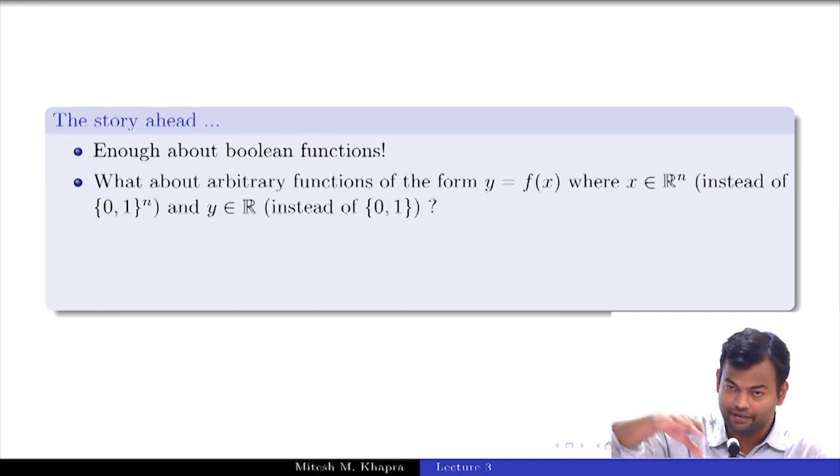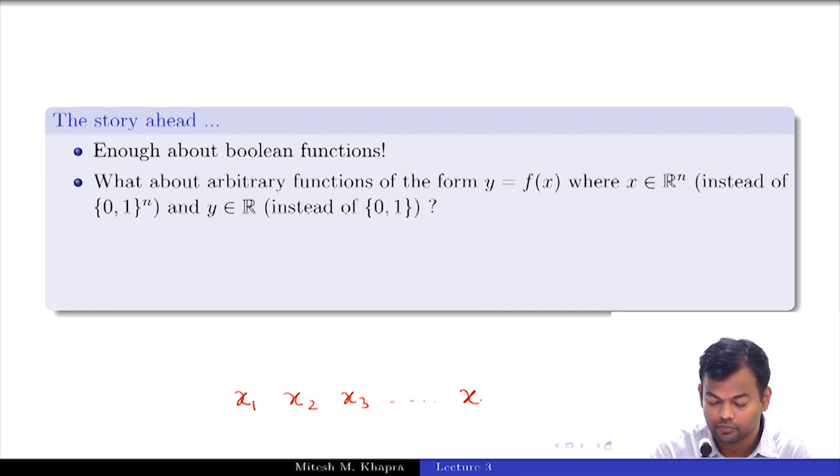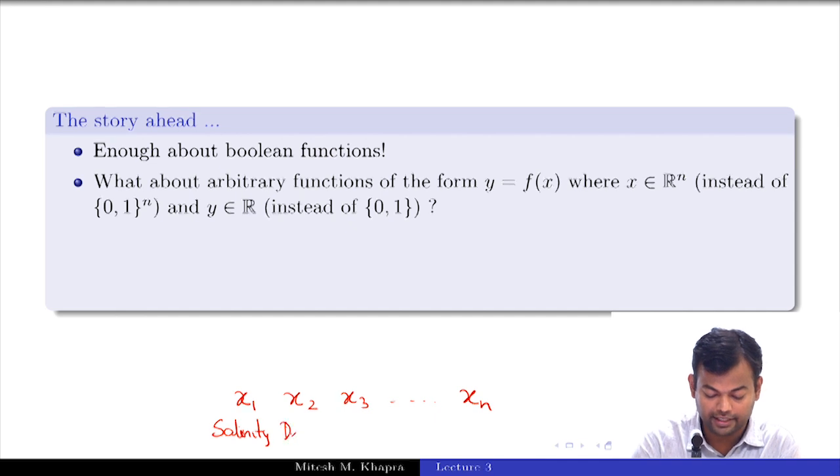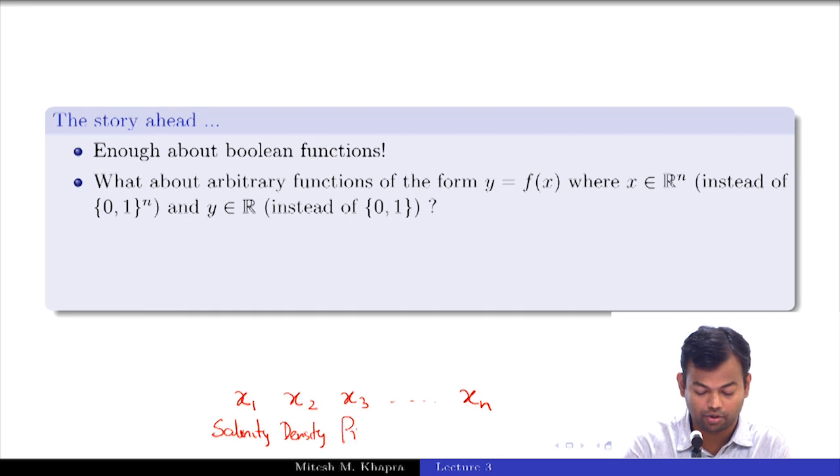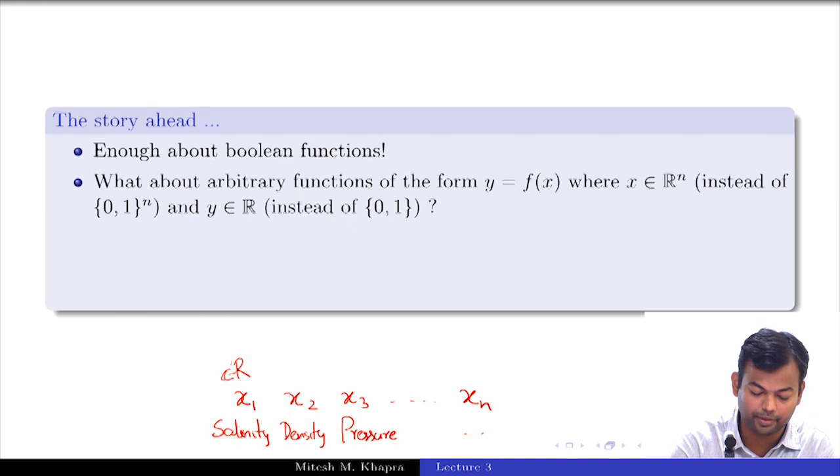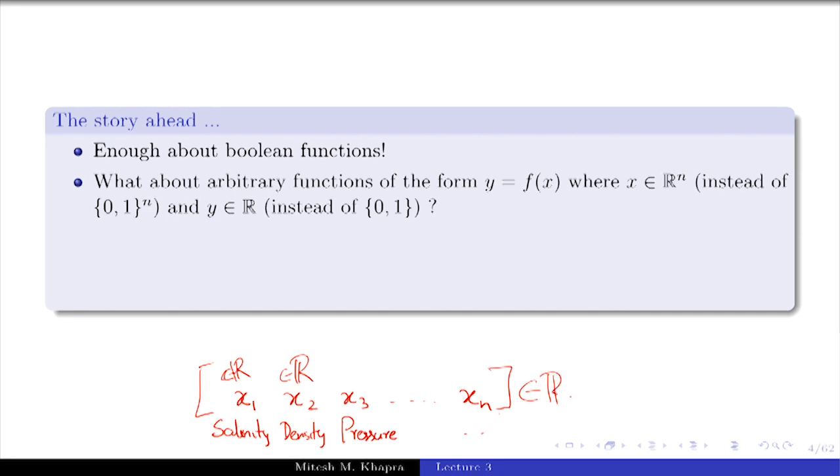Go back to our oil drilling example, where we are given a particular location in the ocean and we are interested in finding how much oil could I drill from this place, and that is what I would base my decision on. This could depend on several factors: x1, x2, x3 up to xn, where this could be the salinity of the water at that location, this could be the density of the water, this could be the pressure on the surface of the ocean bed and so on. Each of these values independently belongs to the set of real numbers.